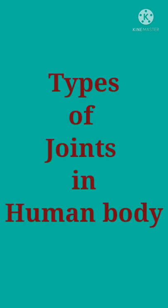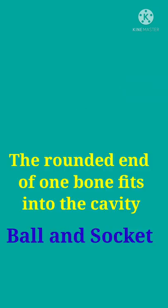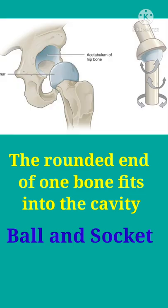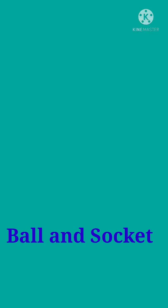In this video we will learn about how many types of joints are there in the human body. The first is the ball and socket joint, where the rounded end of one bone fits into a cavity. In the diagram you can see the ball and socket joint.